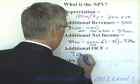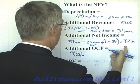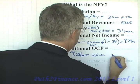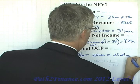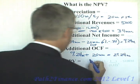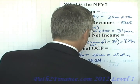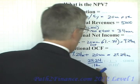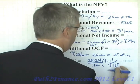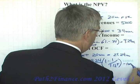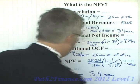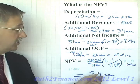Let's calculate our cash flows. We have our $9,240,000 in additional net income, and we add back our $20,000,000 in depreciation, for $29,240,000 in additional operating cash flows. For our net present value calculation: $29,240,000 times the annuity factor at 12% for five years, minus our $100,000,000 investment, gives us a positive $5,400,000 net present value. We should do this project.